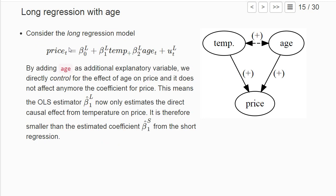Now assume we estimate a long regression where we also add h as an additional explanatory variable. We say that if you're interested mainly in the effect of temperature on price, we control for h.